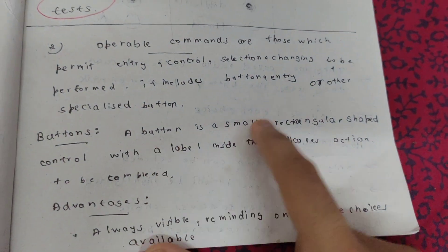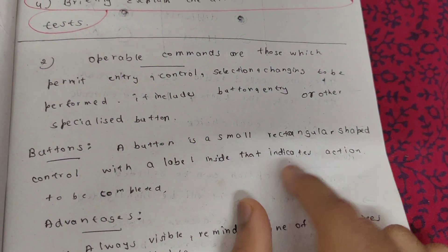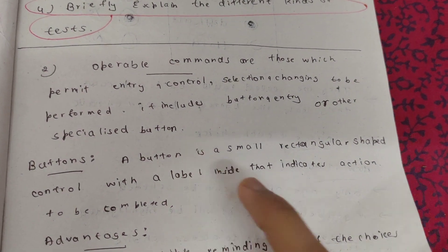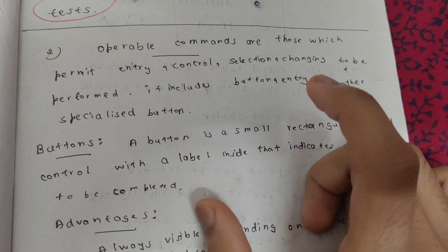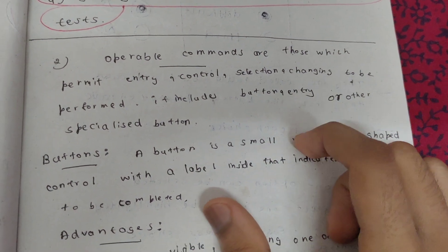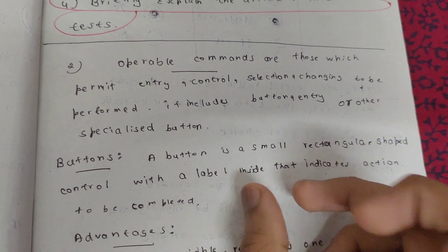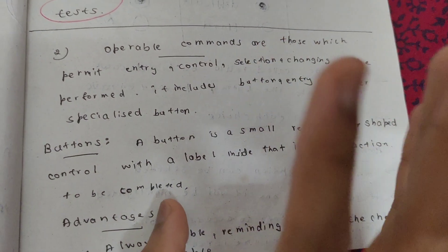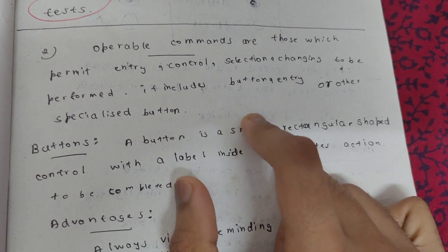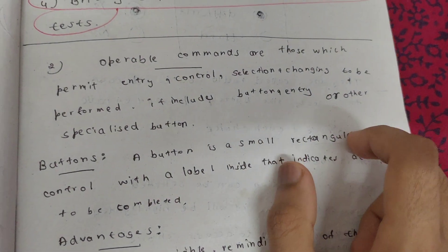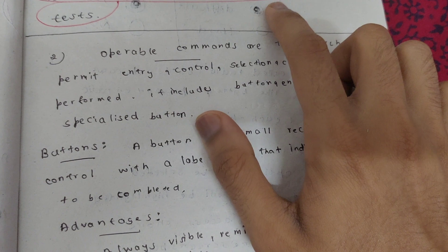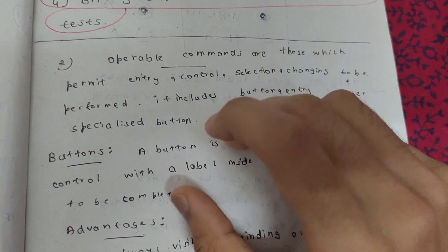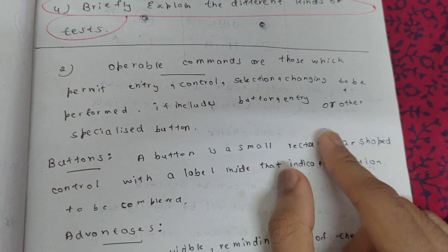So, buttons. A button is a small rectangular-shaped control with a label inside that indicates the action to be completed. When you click on a button on the computer, it creates a rectangular shape. Most buttons are created as rectangles, and that button shape will also be created when clicked.